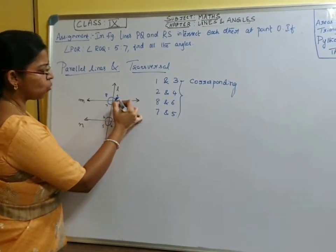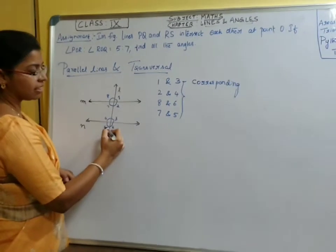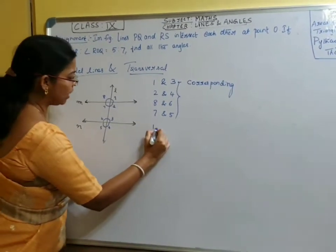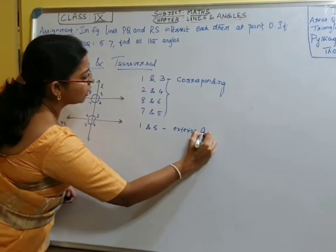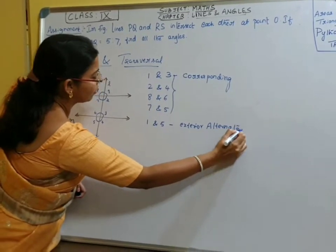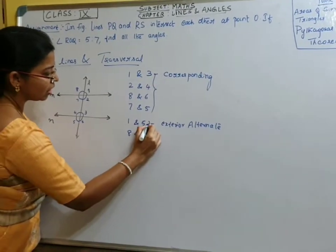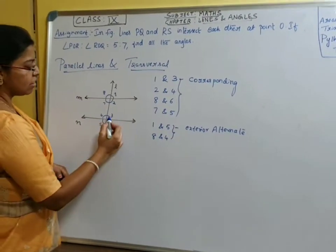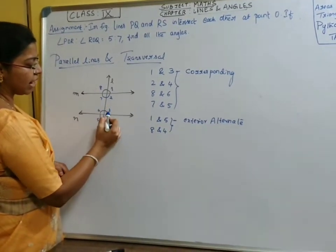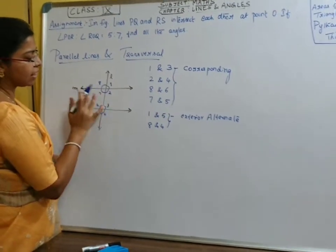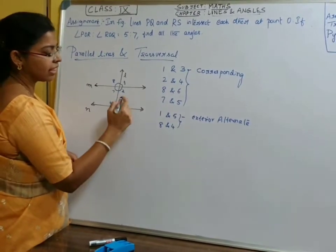Next, what are angles one and five? Are they alternate angles? They are exterior — outside the parallel lines. Therefore one and five are exterior alternate angles. Similarly we have eight and four, which are also exterior alternate angles. When we have exterior alternate angles, we have interior ones also: two and six, seven and three — they are alternate and on either side of the transversal, so they are called alternate interior angles.